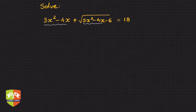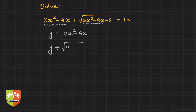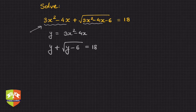Let's first try to reduce it to a simpler-looking form. Let's say y = 3x² - 4x. If we do this, the equation becomes y + √(y - 6) = 18. Now it is much simpler, but there is still a radical creating trouble.